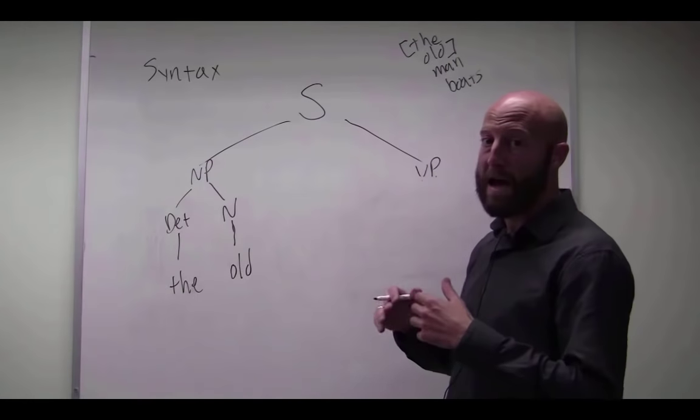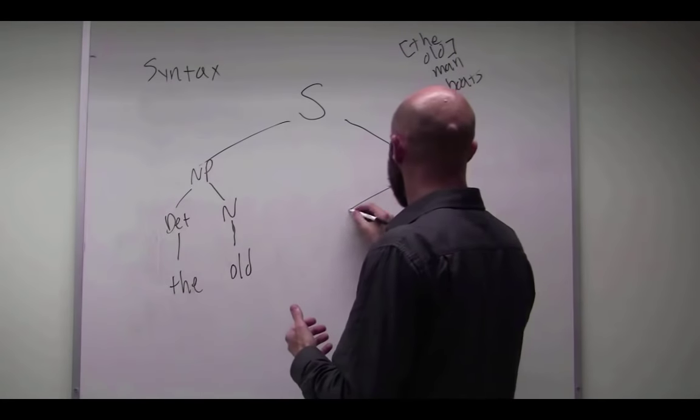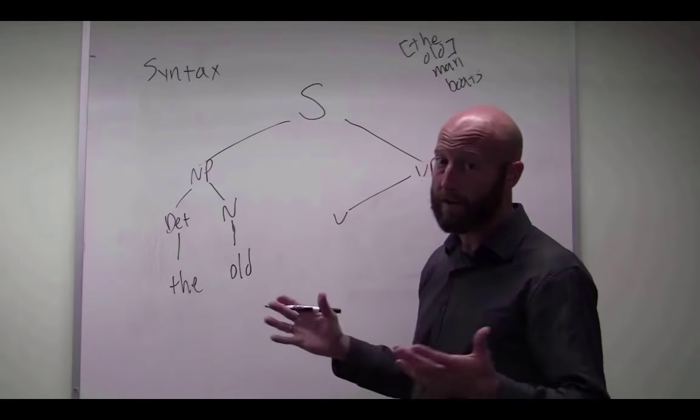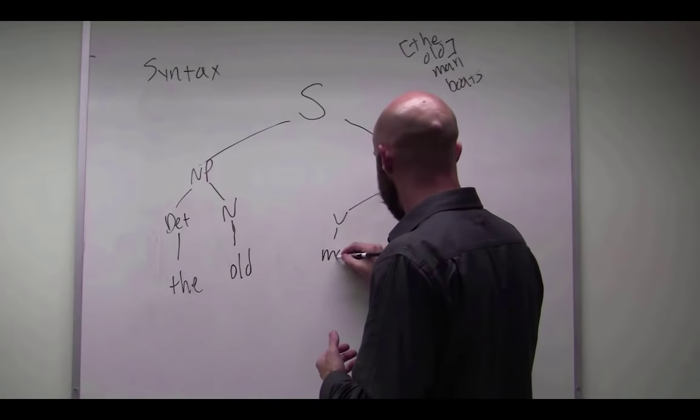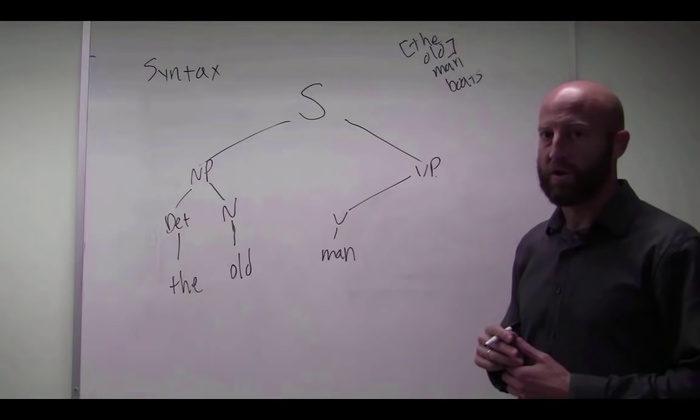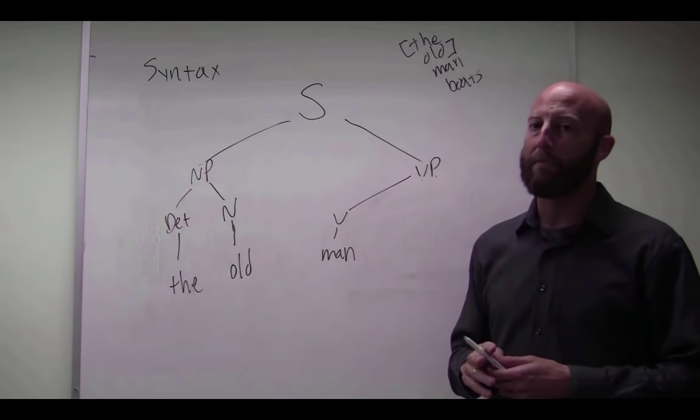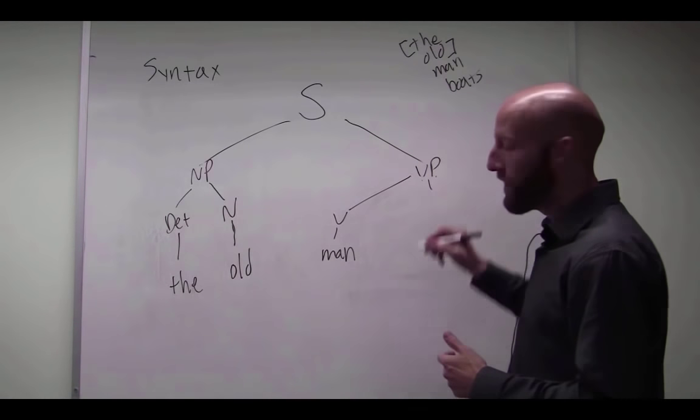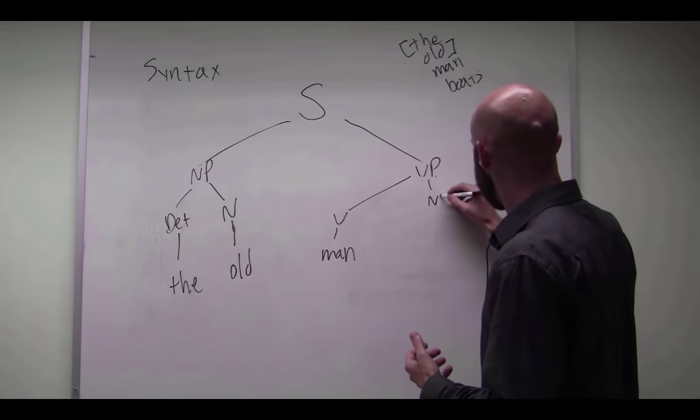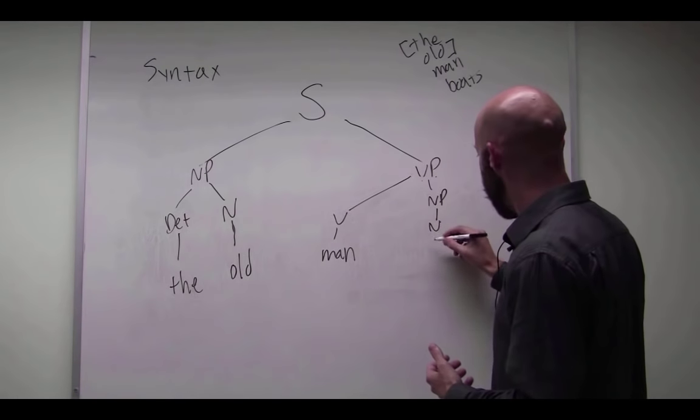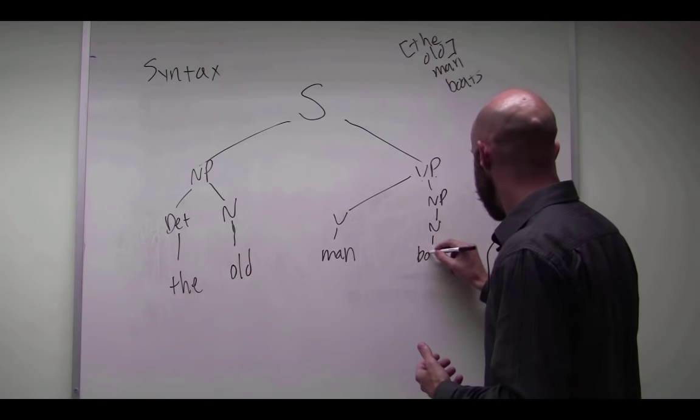And then we have man, and if that's the verb we know it must be part of the verb phrase and everything after it is too. And then we have boats. So boats, it's a noun, we know that, but remember we have to first indicate the phrasal level. And then the noun boats.